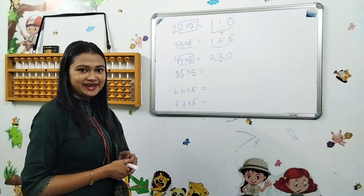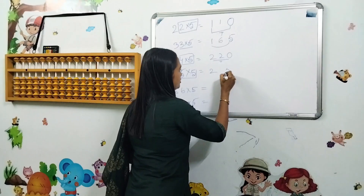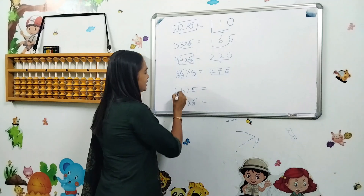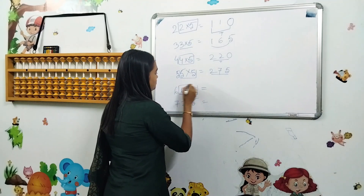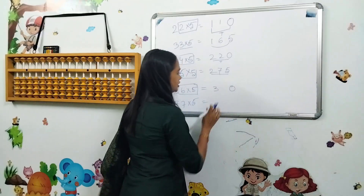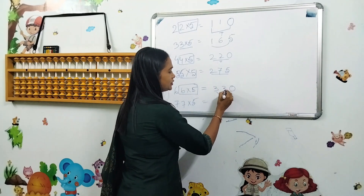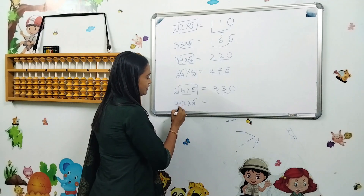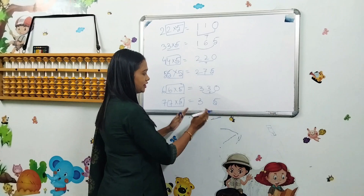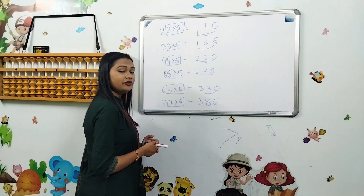So next one is 55 into 5, which is 25. And the answer is 7, so 275 will be the answer. Next is 66 into 5, that will be 30. And the answer is 3 plus 0, which is 3. Next one is 77 into 5, which is 35. The answer is 3 and 5, which is 8. The answer will be 385.